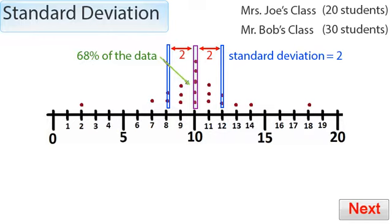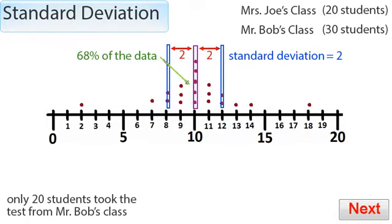So let's now do Mr. Bob's class. Let's say rather than 30 students taking the test, only 20 did. Maybe 10 were away or Mrs. Jo said she only wanted 20 students to be taken in the test to match the number in her class. Let's say each student got a mark from 1 to 20.